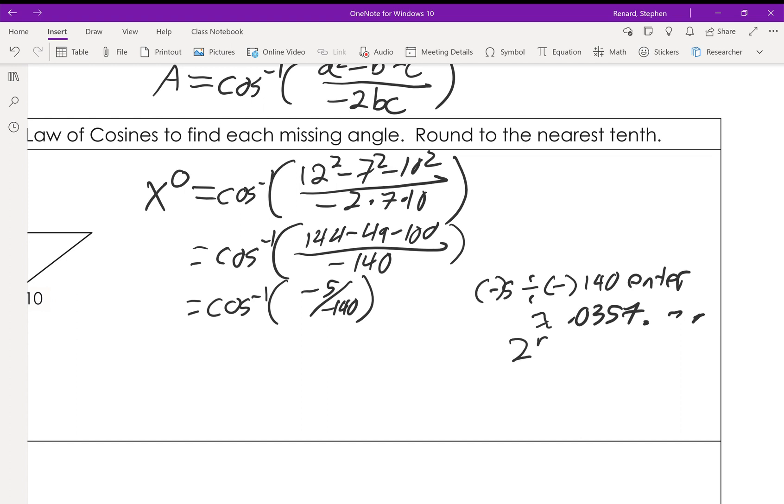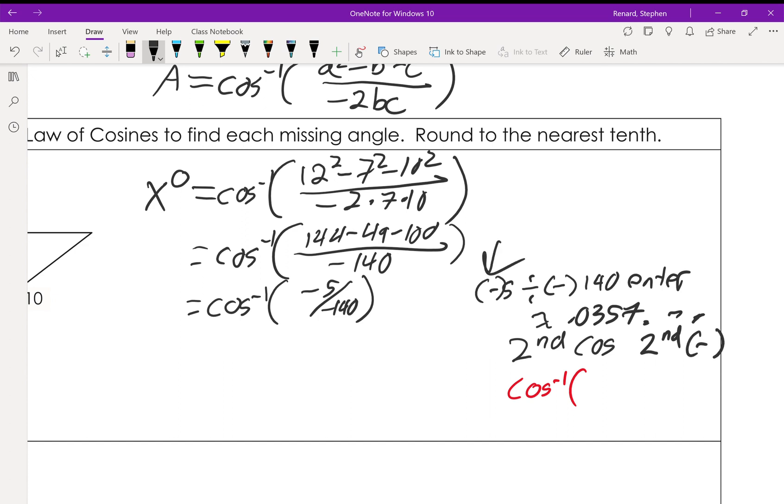So what we're then going to hit is we're going to hit second cosine, and then what's going to happen is up on your screen this is going to pop up. And that says okay, now I know that you don't want the cosine, you're going to give me the cosine and I'm going to tell you the angle. So then you're going to go ahead and you're going to hit second again and you're going to hit the little negative sign, the same one you did right here.